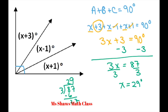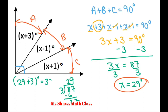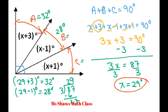Now we call the angles A, B, and C, and we plug in our X to find the actual degrees. For A: X plus 3, so 29 plus 3 degrees equals 32 degrees — A equals 32 degrees. For B: 29 minus 1 degrees equals 28 degrees — B equals 28 degrees.